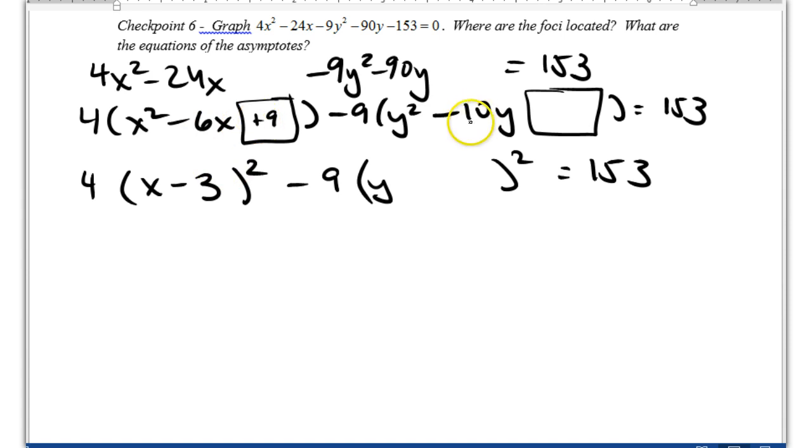Again, here I'm trying to find the number that would give me a middle term of negative 10. Well, that would be negative 5, which is also the square root of that, which is 25 is half of 10 squared.